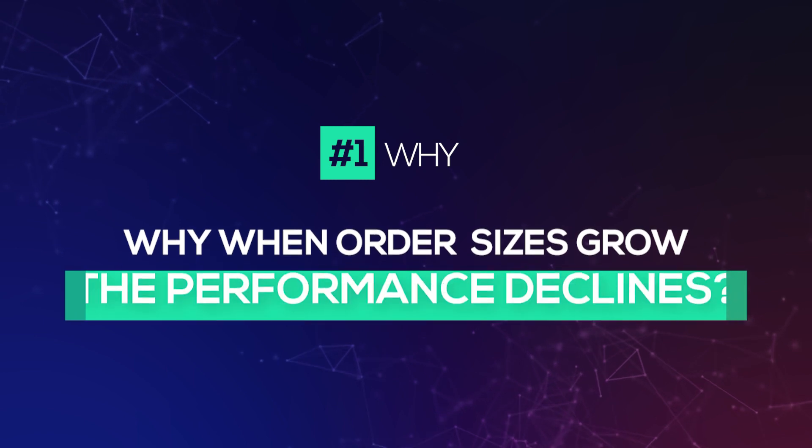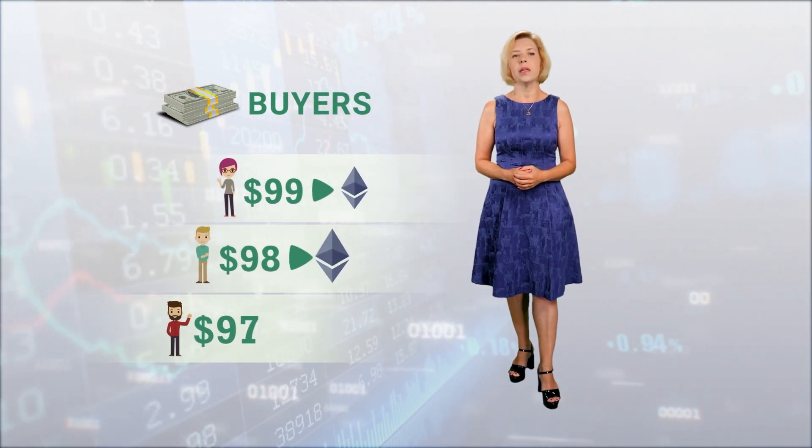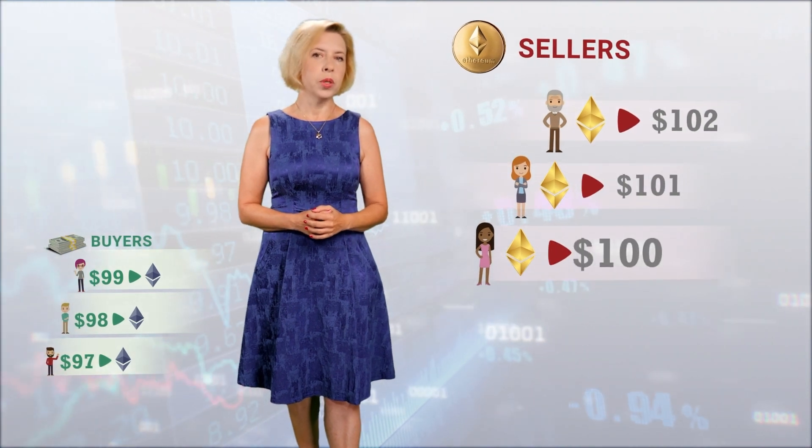Now let's delve into my favorite five whys. Why number one: why when order sizes grow does performance decline? When it comes to execution in financial markets, there are two possible ways to get the original price — as a market taker or as a maker. On the left, we have buyers that place their orders and want to buy at certain prices, meaning give dollars and get ethereums in return. And here are the sellers that want to sell at certain prices — give ethereums and get dollars in return. I want to buy at the price of 100, meaning each ethereum costs $100. To buy 10 ethereums, I need to pay $1,000. So I give the first seller $1,000, and the seller gives me 10 ethereums, then continues to wait for someone else to buy the remaining 65 ethereums.